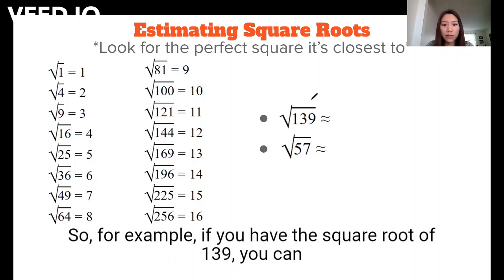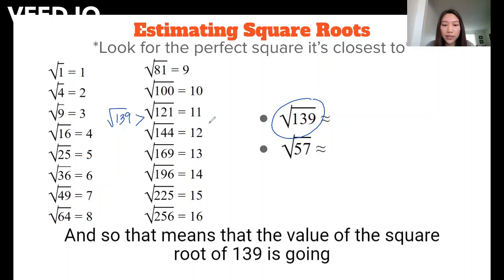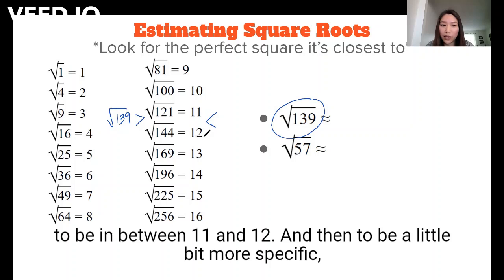So for example, if you have the square root of 139, you can see that it's right in between the square root of 121 and 144. And so that means that the value of the square root of 139 is going to be in between 11 and 12.